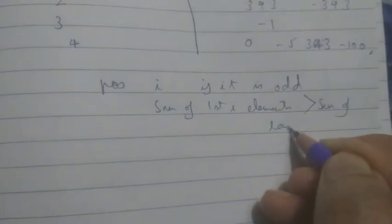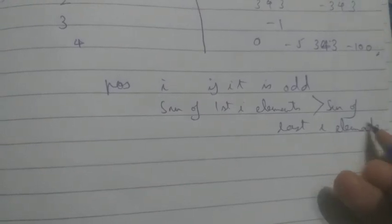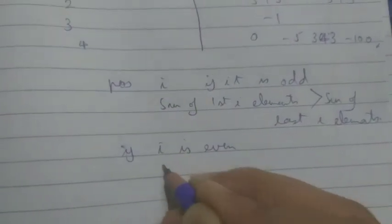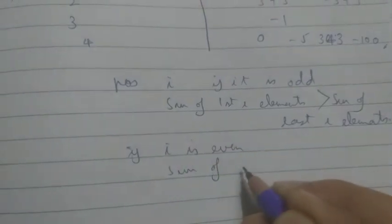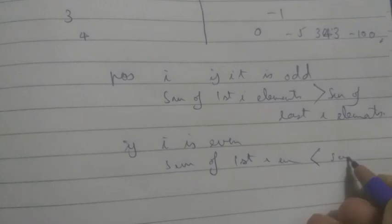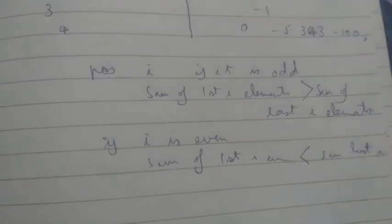Okay, it is greater than the sum of last i elements. And if i is even, then sum of first i elements is lesser than the sum of last i elements. So this is the basic thing, the basic code.